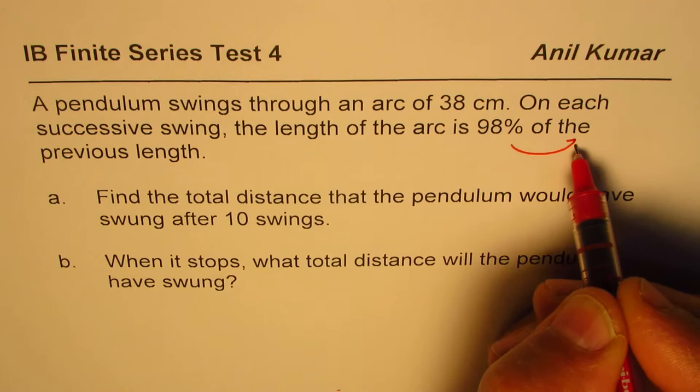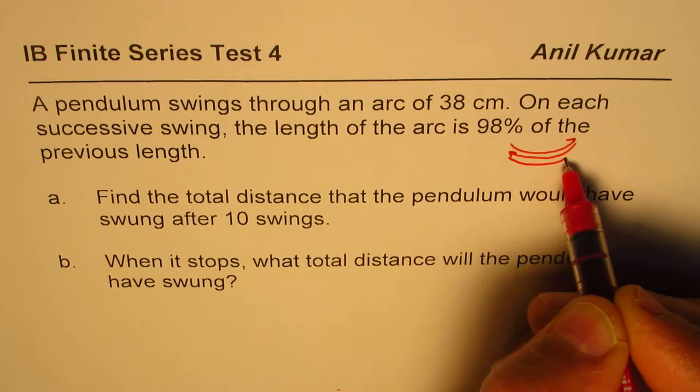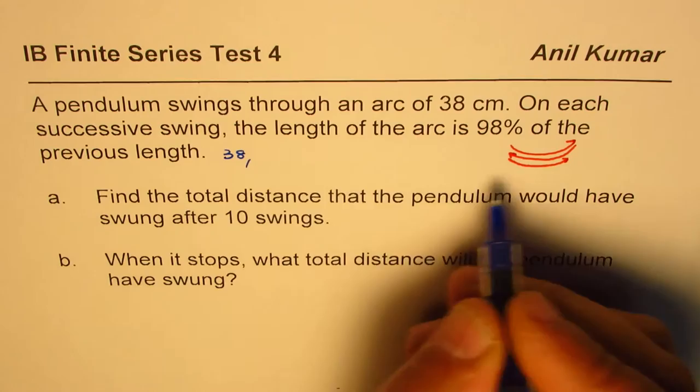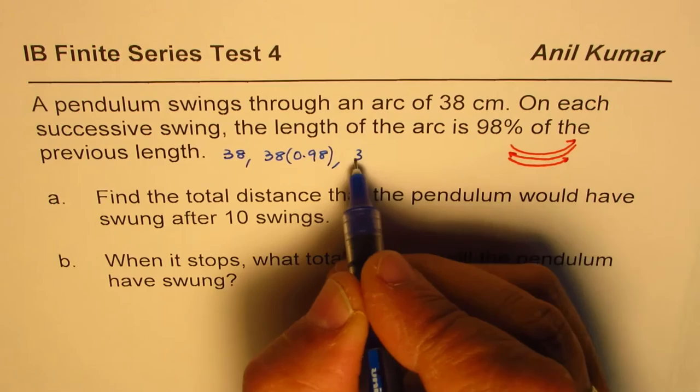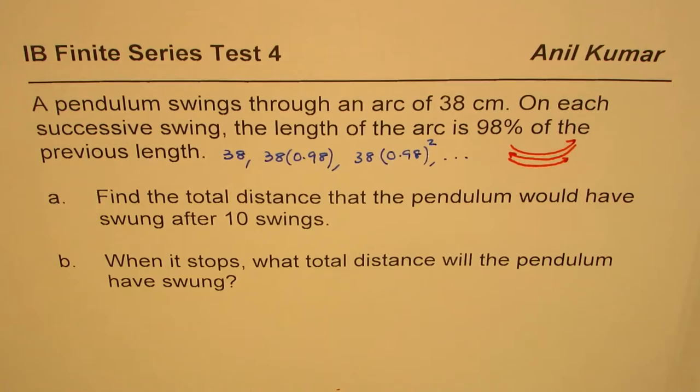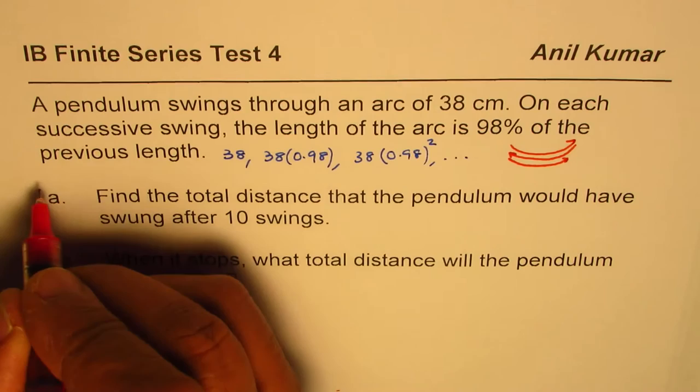As we understand this movement of the pendulum, 38 centimeters and then returning 98% and then again 98% of the previous one, this gives you the length of the swings. Let me write them down. We start with 38, the next swing will be 38 times 0.98, and then 38 times 0.98 times 0.98, and so on. What do we observe? We observe that we are working with a geometric series.